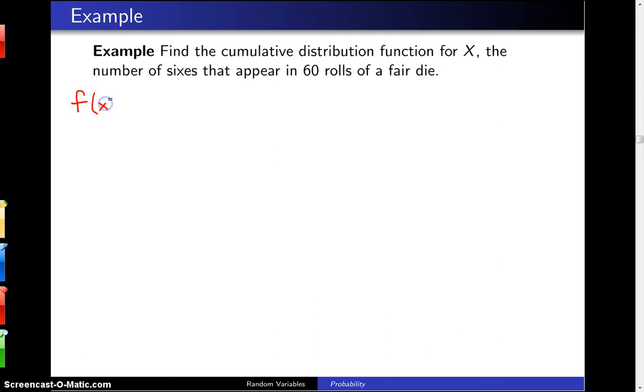So we begin by attempting to write down the probability mass function for that random variable. I'm going to start by laying out the support of the distribution. When you roll a fair die 60 times, you could get zero sixes, or one six, or two sixes, all the way up to 60 sixes. Very unlikely, but possible.